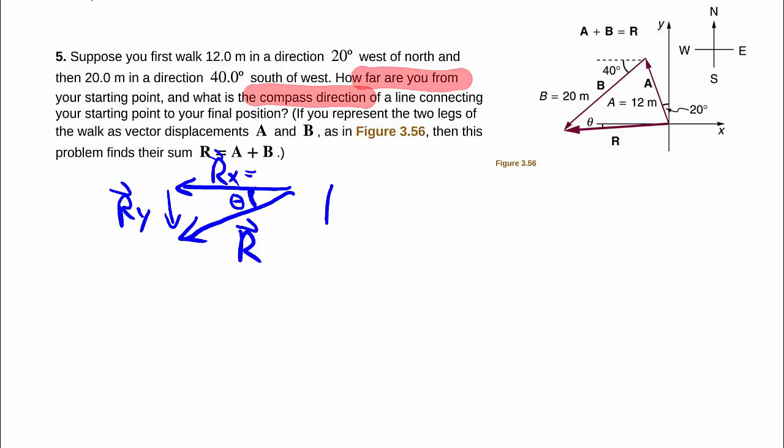So first off, we want to find the magnitude of such a vector that's made up of these components. So we're just going backwards, right? Instead of decomposing, we're recomposing to get the resultant. In this case, we once again have a right angle triangle. So we can use Pythagoras.